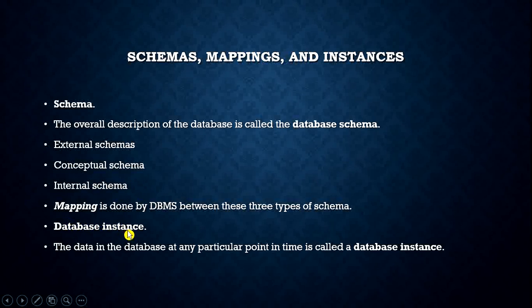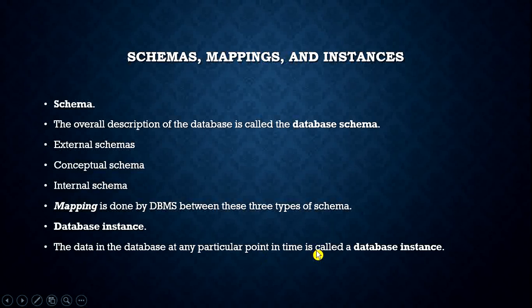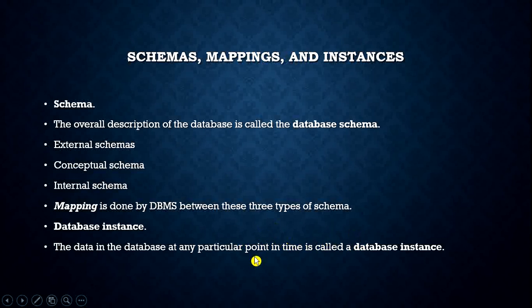The database instance refers to the actual data in the database at any particular point in time. When we talk about schema, we are talking about the overall structure and design of the database. The database instance, on the other hand, is the actual records — for example, the registration number of a student stored in the database at a particular time is the database instance.